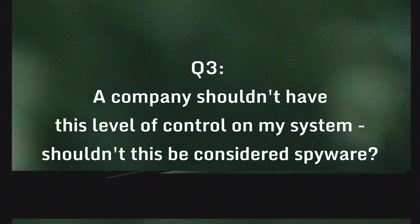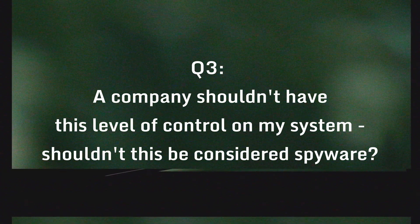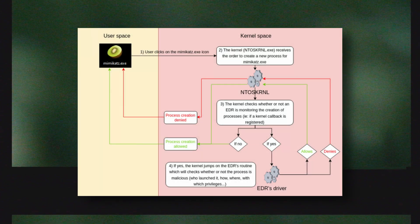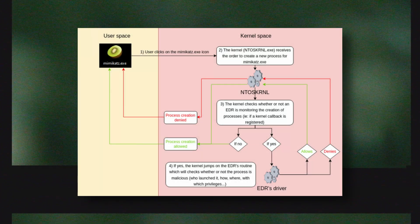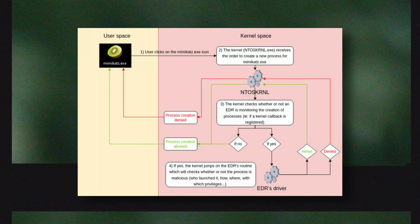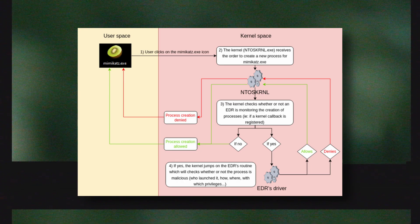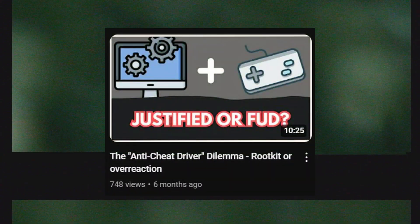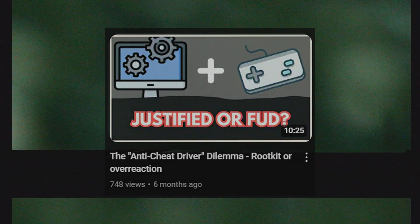Another concern: shouldn't this level of control be considered spyware? EDRs require kernel-level privilege to see, monitor, and block threats on your system before or as they are happening. Without this level of access, EDRs can easily be turned off by malicious actors. Whilst kernel-level EDRs can still be defeated, it makes the threat actor's job a lot harder and often easier to detect before they can make such a move. Most EDRs do not collect sensitive information — they only collect the necessities, as more data would just clog up storage and simply invite more trouble.